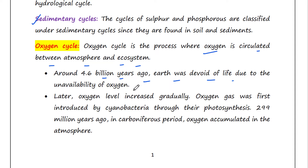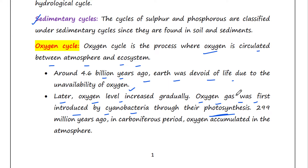At that time there was very little oxygen, and later the oxygen level increased gradually. Oxygen gas was first introduced by cyanobacteria through their photosynthesis. Around 299 million years ago, in the Carboniferous period, oxygen accumulated in the atmosphere.